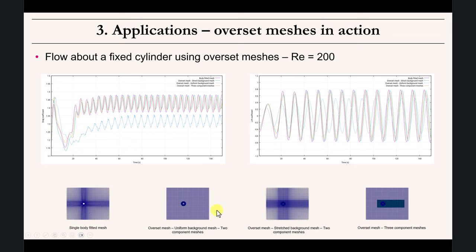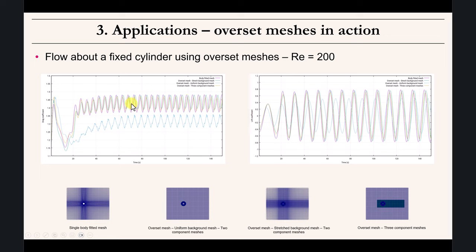Let's look at a few applications showing the solution with different meshes. Here we have a single block, then overset meshes with different topologies — two bodies and three bodies — with pretty much similar solutions. The blue line (one case) is not a good solution, and this stretching is introducing some problems in the interpolation. This is something you have to be careful about — this is part of the new way of thinking when generating the mesh.